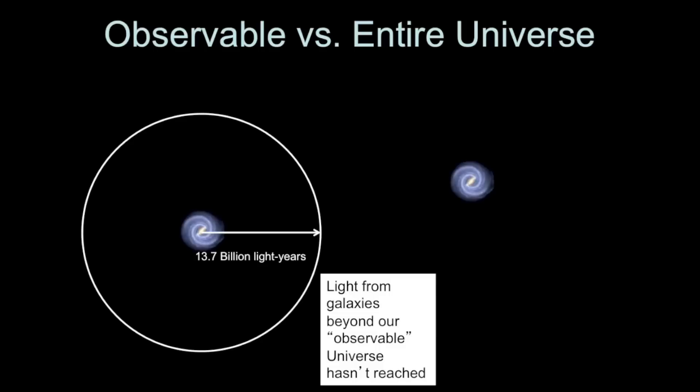Astronomers will sometimes talk about the observable universe, and what that means is from our vantage point in the Milky Way galaxy, there's a specific distance that we're able to see out to. And that distance that we can see out to includes everything that has emitted light that has had time to actually reach the Milky Way.